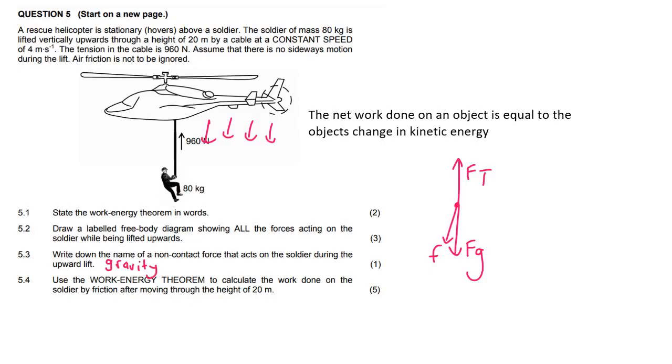Then it says use the work energy theorem, which is W net equals to change in EK, to calculate the work done on the soldier due to the friction after moving a height of 20 meters. We can use W net equals to change in EK, and the forces responsible for the motion would be all three of these. We would say it's W due to the tension plus W due to friction plus W due to gravity equals delta EK.